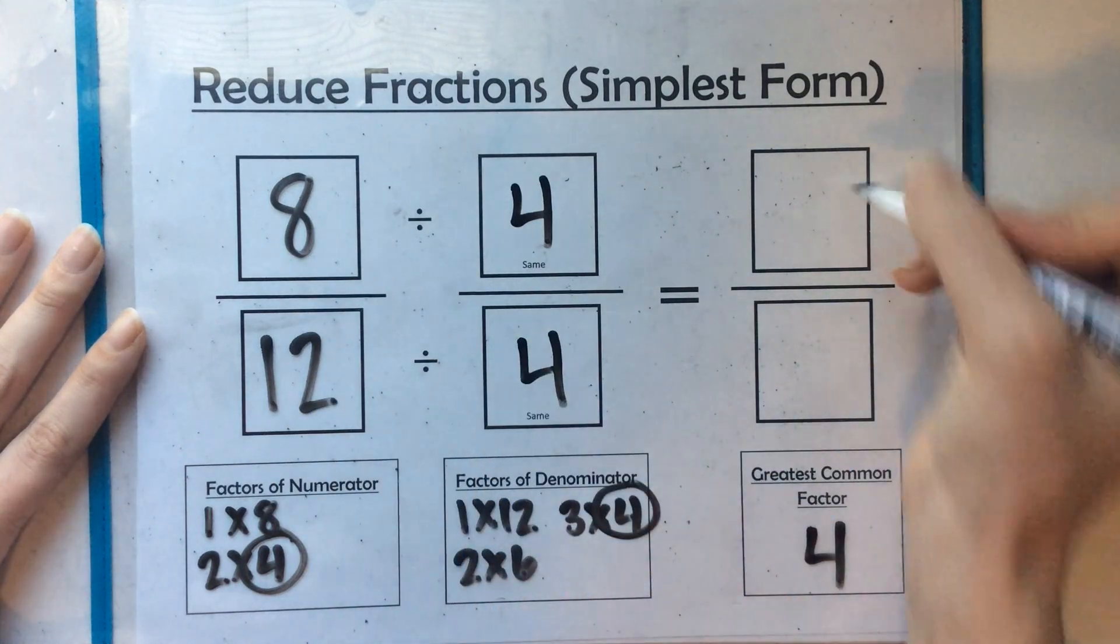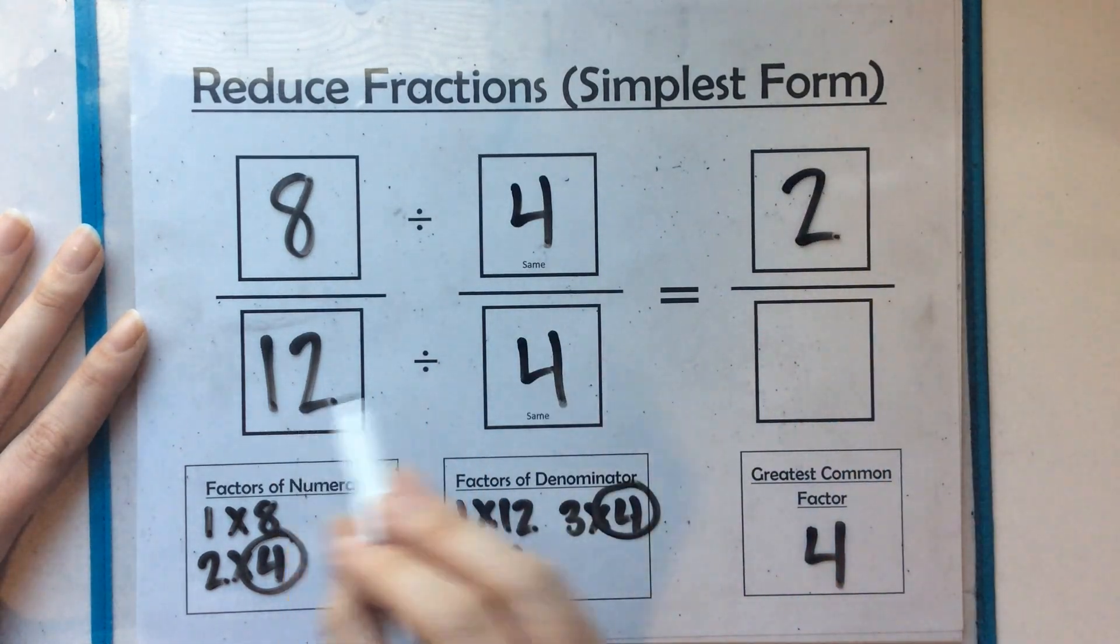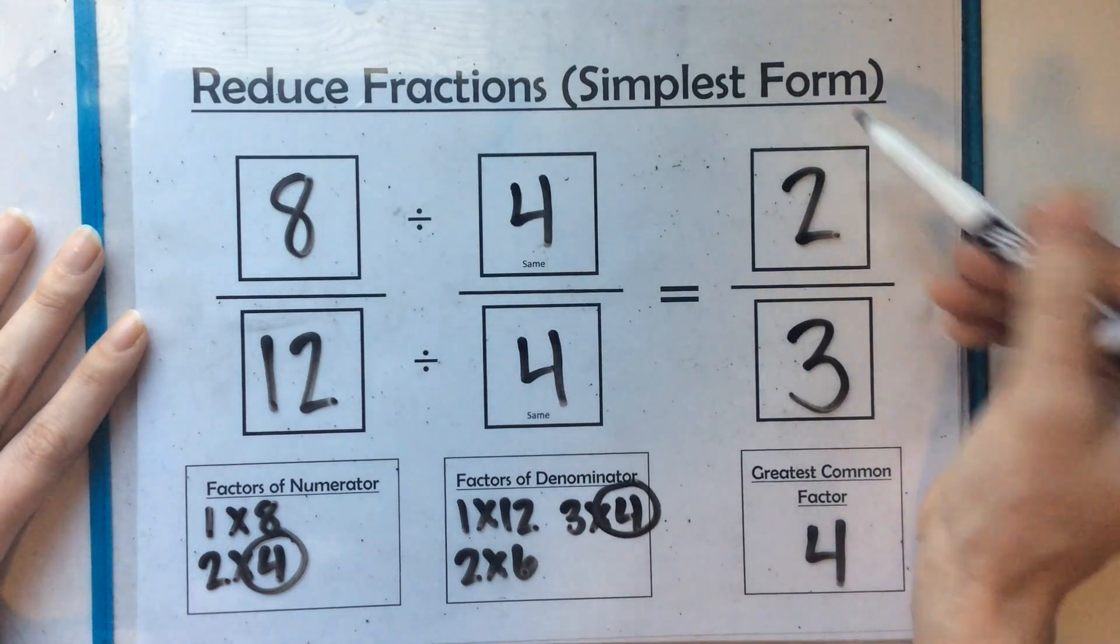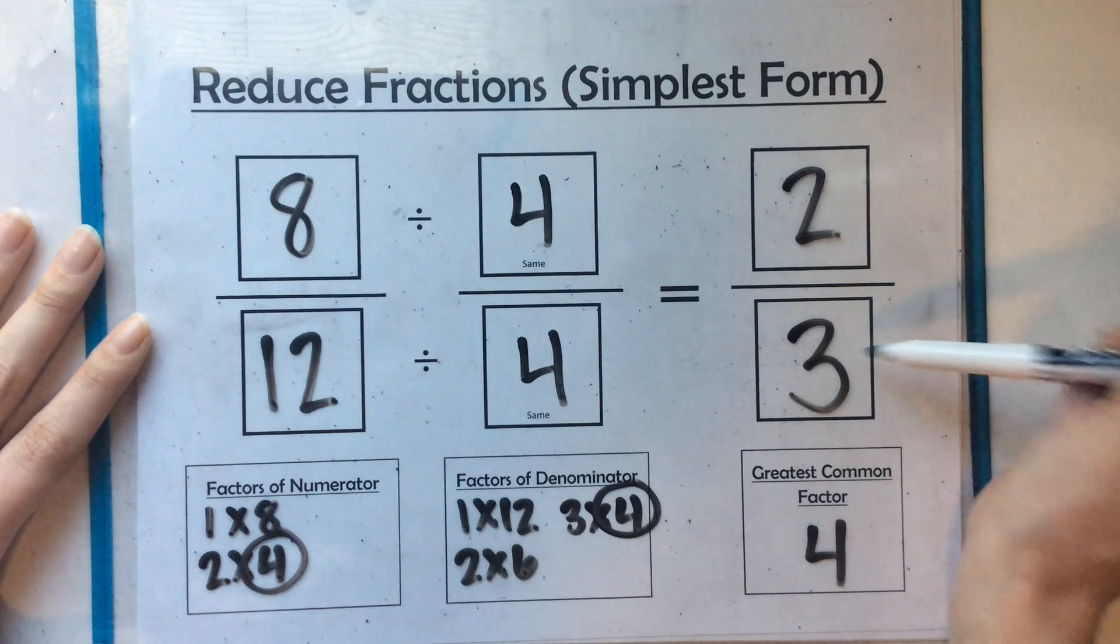8 divided by 4 is 2. 12 divided by 4 is 3. So my simplest form of 8 twelfths is 2 thirds.